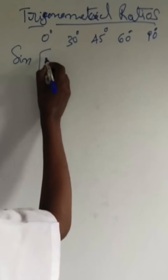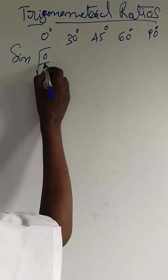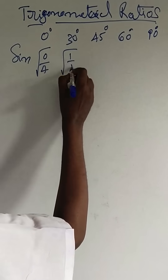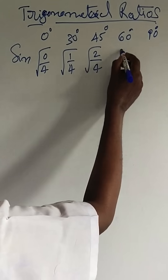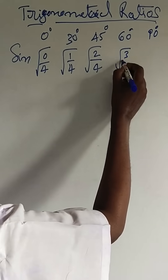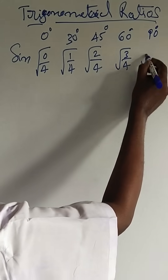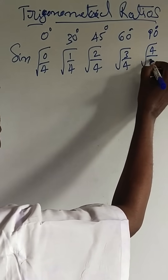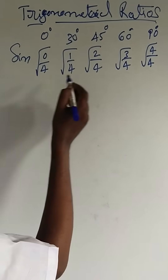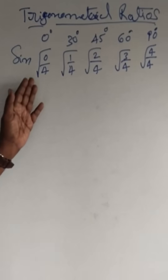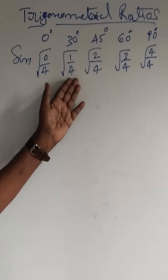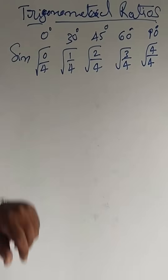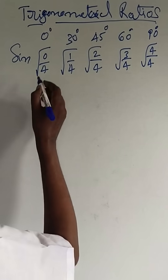Here is an easy way to remember the sin values. Square root of 0 by 4, square root of 1 by 4, square root of 2 by 4, square root of 3 by 4, square root of 4 by 4. It is very easy to remember: square root of 0 by 4, 1 by 4, 2 by 4, 3 by 4, 4 by 4.